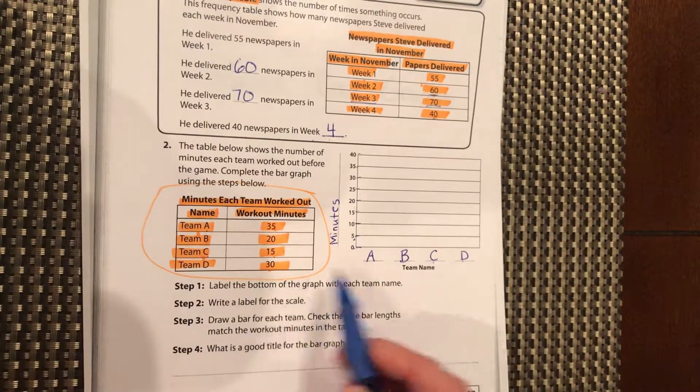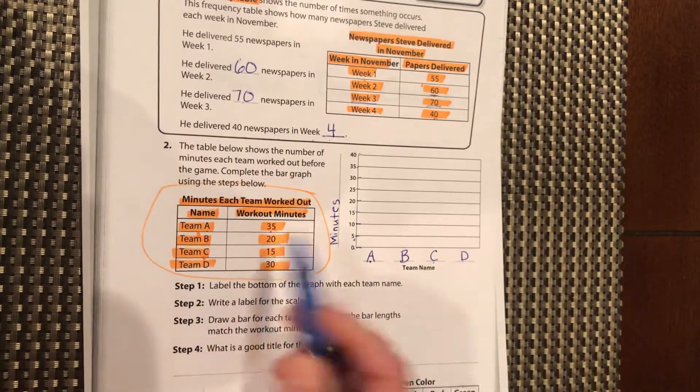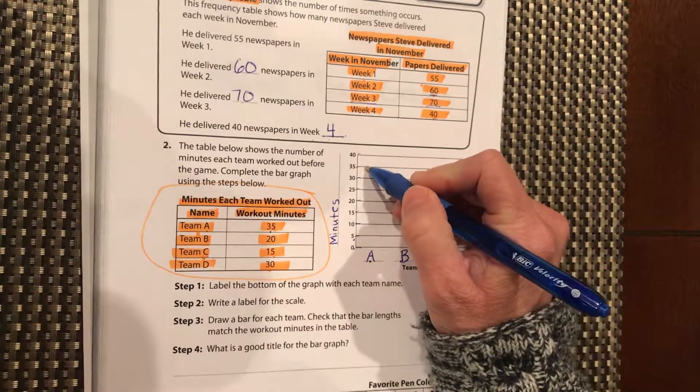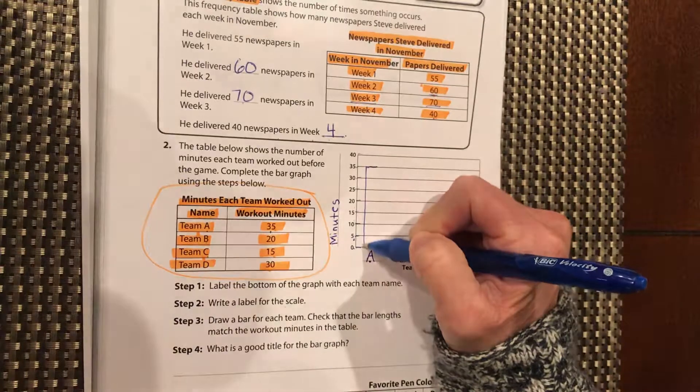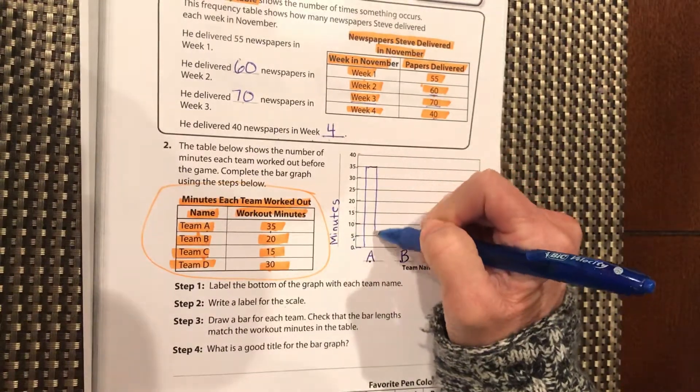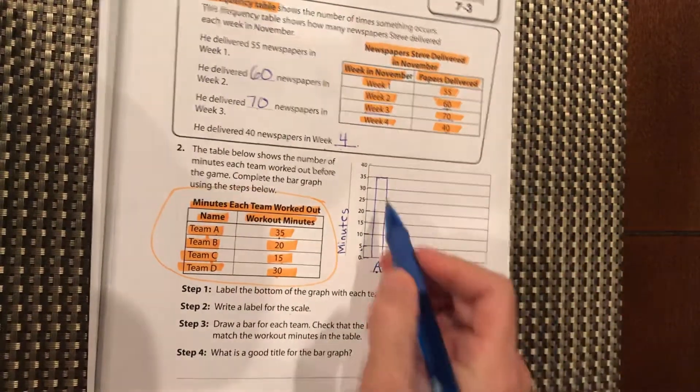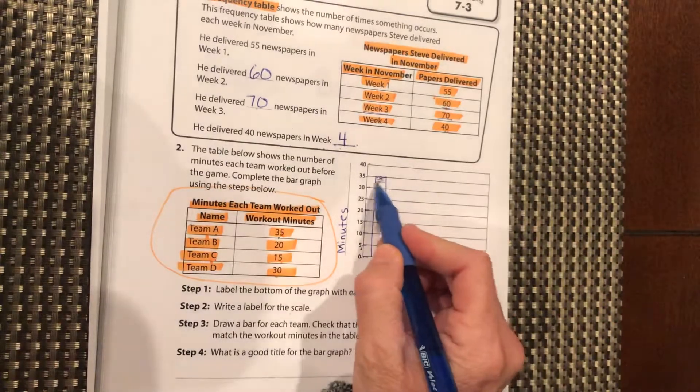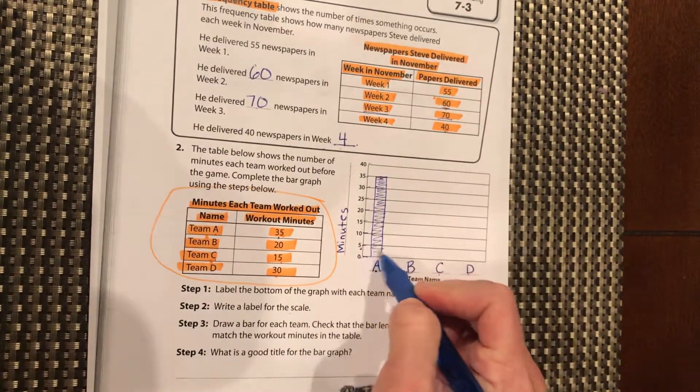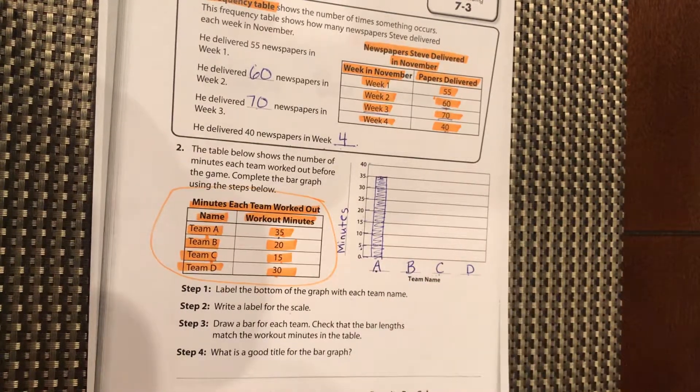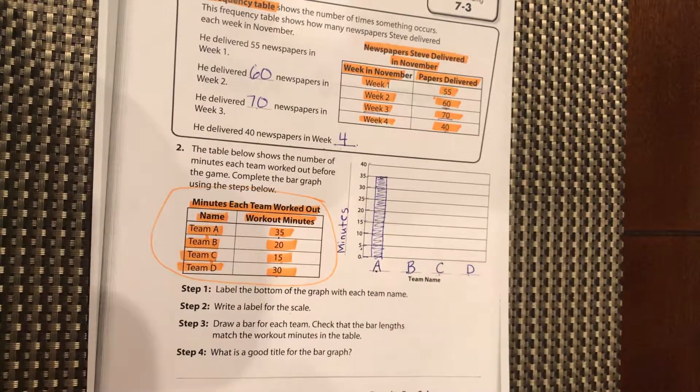Draw a bar for each team. Team A is 35 minutes. So we go up here to 35. This is going to be the top of our bar. I'm going to come down and then you can just kind of shade it in.